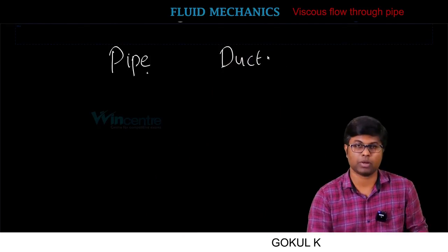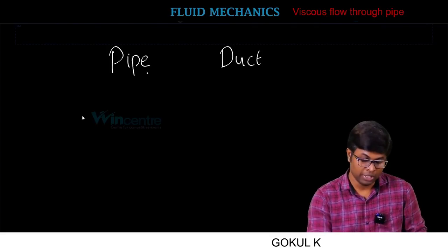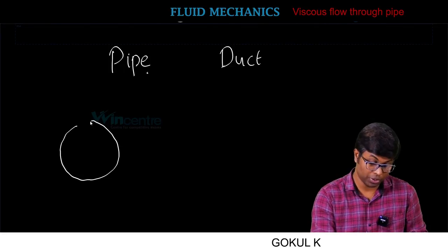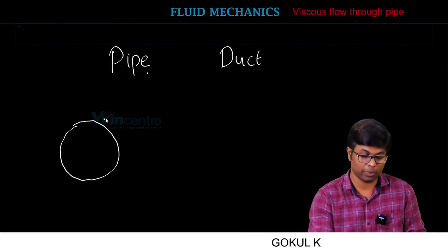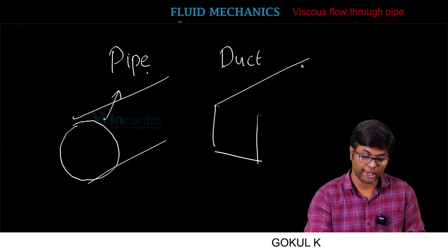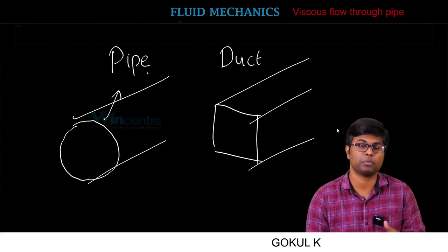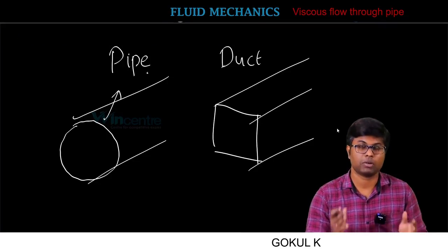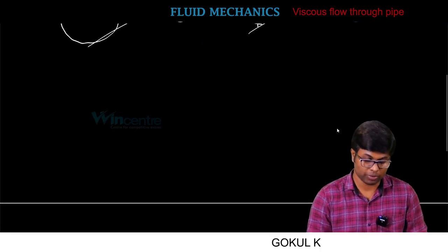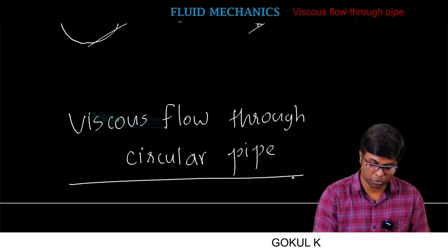What is a pipe and duct? A fluid transmitted in a closed conduit is ducted. This conduit is circular in cross-section — that is called a pipe. Both pipe and duct are used for transferring fluid from one point to another without any contact with the atmosphere. So we will discuss viscous flow through a circular pipe.